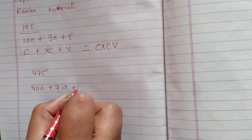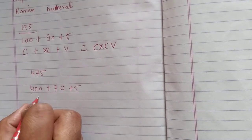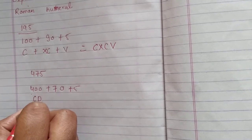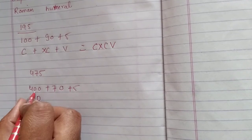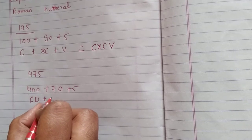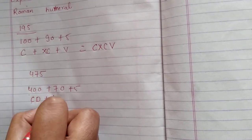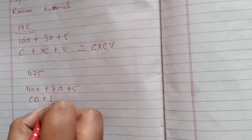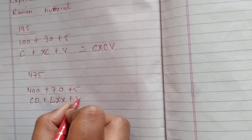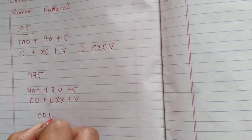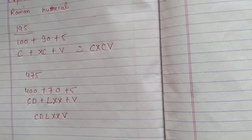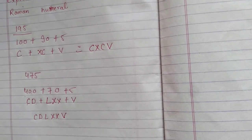For 475: break it as 400 plus 70 plus 5. For 400: 500 minus 100 gives CD. For 70: 50 plus 10 plus 10 gives LXX. For 5: V. So 475 becomes CDLXXV. Okay beta, now come to the next question.